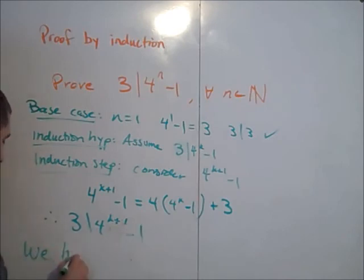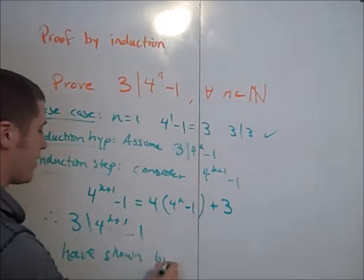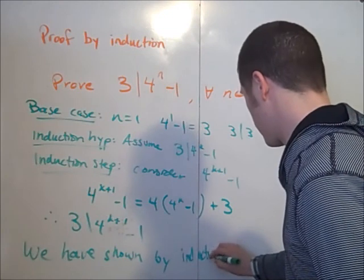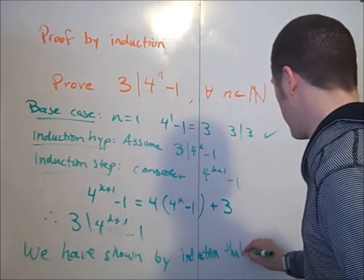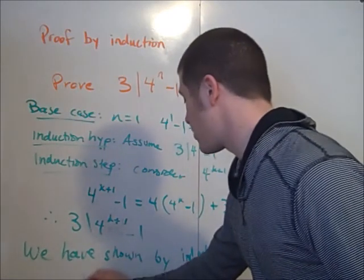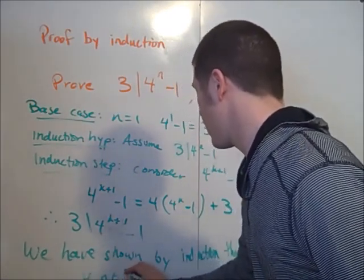So we have shown by induction that 3 divides 4 to the n minus 1. That is for all n in the natural numbers.